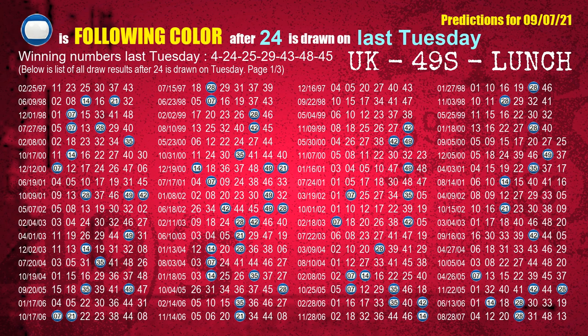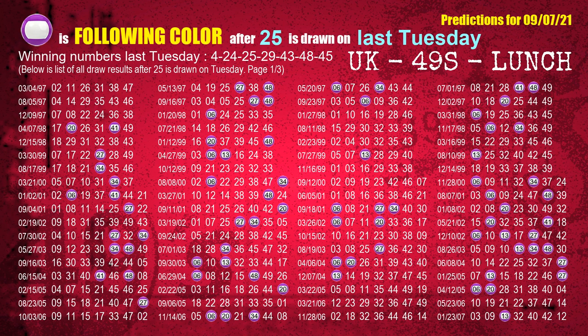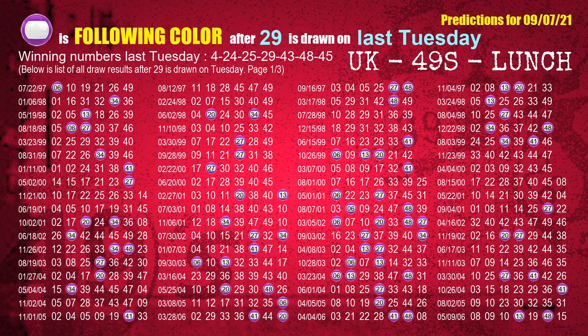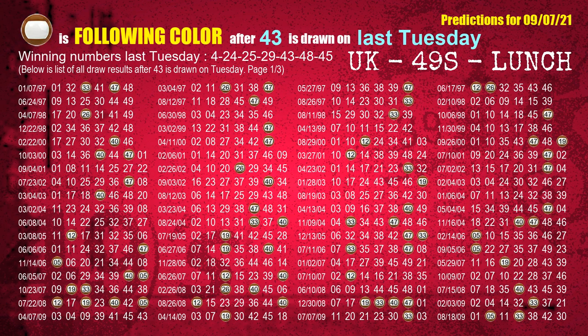The second winning number last Tuesday is 24. The most frequently following color is blue when 24 is the winning number on last Tuesday. The third winning number last Tuesday is 25. The most frequently following color is purple when 25 is the winning number on last Tuesday. The fourth winning number last Tuesday is 29. The most frequently following color is purple when 29 is the winning number on last Tuesday. The fifth winning number last Tuesday is 43. The most frequently following color is brown when 43 is the winning number on last Tuesday.